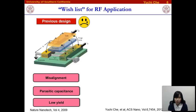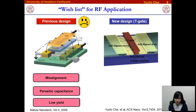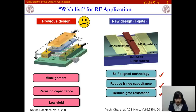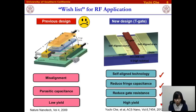In order to solve these problems, we have developed a new device platform: the self-aligned T-gate design. With this T-shaped structure, we can achieve self-aligned technology and further shorten the channel length. We can also reduce parasitic effects to improve device performance. Moreover, under our experimental conditions, we can achieve a relatively high yield of up to 90%. All these advantages make us believe that the self-aligned T-gate design is a good device platform for carbon nanotube RF electronics.